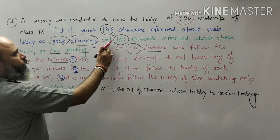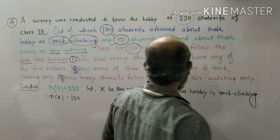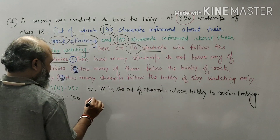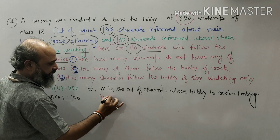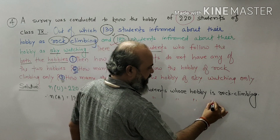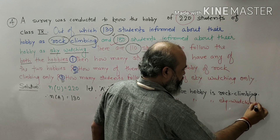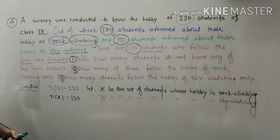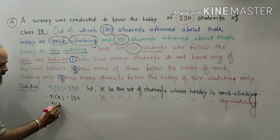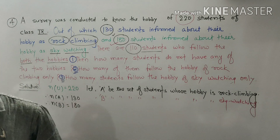And 180 students informed about their hobby as sky watching. So let B be the set of students whose hobby is sky watching. Therefore, number of B is 180.